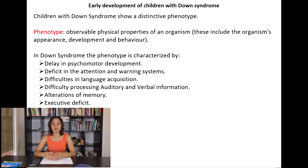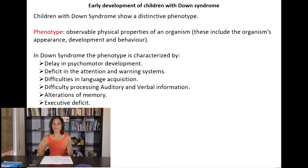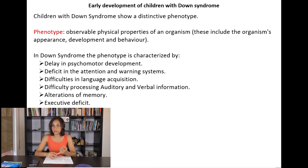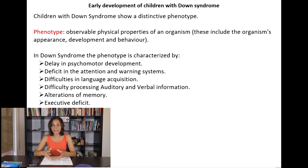Children with Down syndrome show a distinctive phenotype. The phenotype is the observable physical properties of an organism. This includes the organism's appearance, development, and behavior. In Down syndrome, the phenotype is characterized by a delay in psychomotor development.